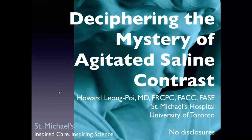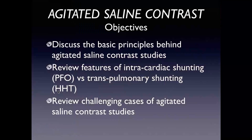Today's objectives: we're going to discuss basic principles behind these studies, review features of intracardiac shunting — PFOs plus or minus other interatrial shunts — versus transpulmonary shunting or HHT, some of the nuances behind this. It's not quite as simple as you may think. We've seen many challenging cases over the years and we'll review some of those, hopefully with a little bit of audience input.